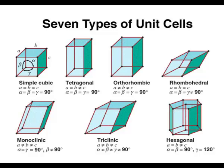There are seven types of unit cells: simple cubic, tetragonal, orthorhombic, rhombohedral, monoclinic, triclinic, and hexagonal.